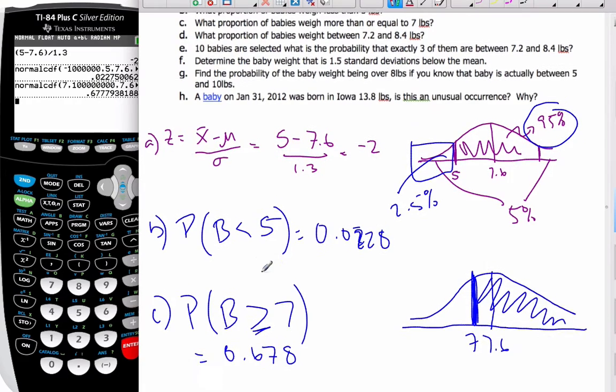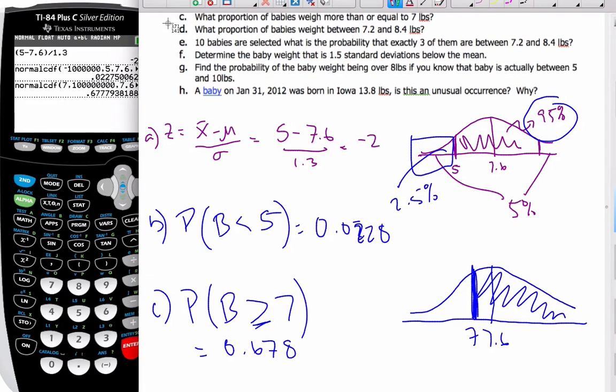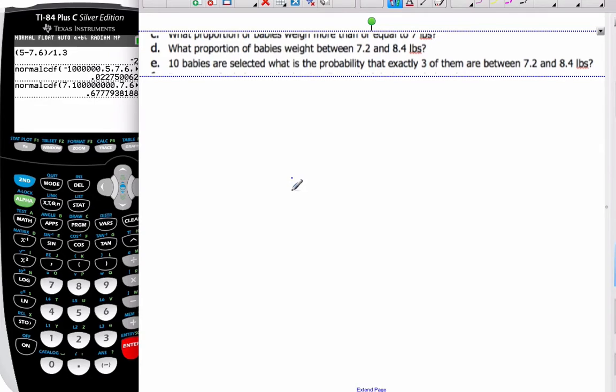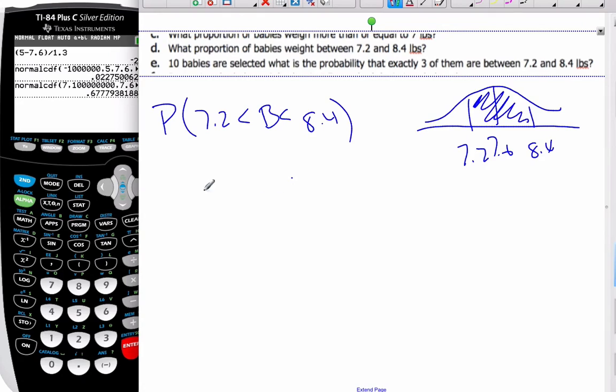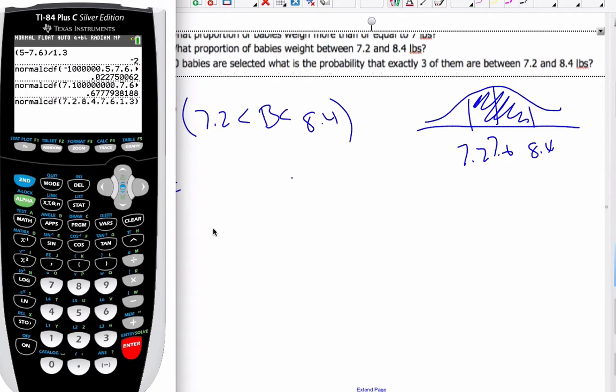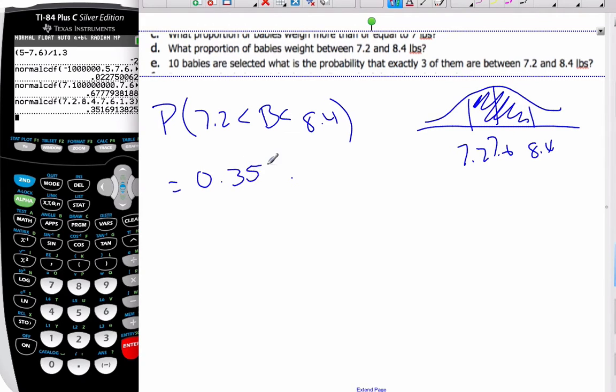Part D asks what's the proportion of babies between 7.2 and 8.4? I'm looking for the probability that 7.2 is less than B, less than 8.4. I have my graph with 7.6, 7.2, 8.4. I'm looking for this inside area. Using my calculator, I can find it's between 7.2 and 8.4, and our value is 0.352.